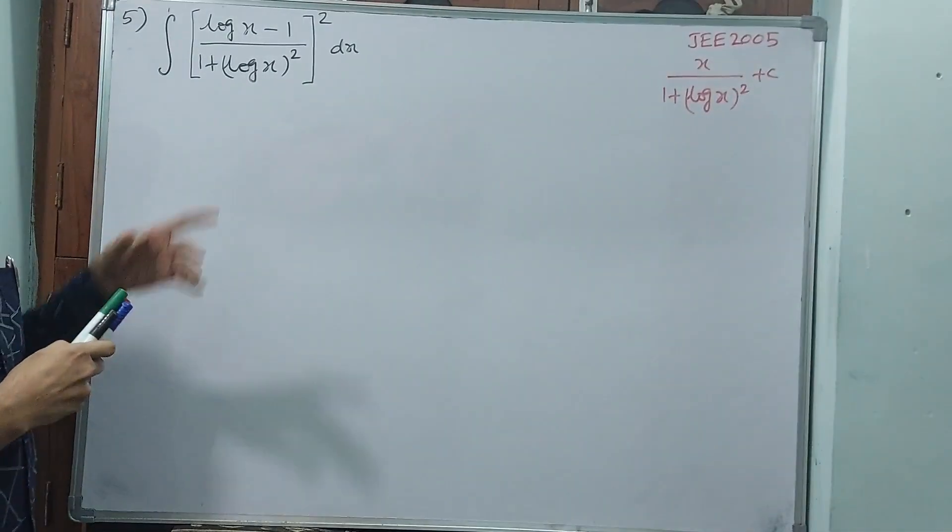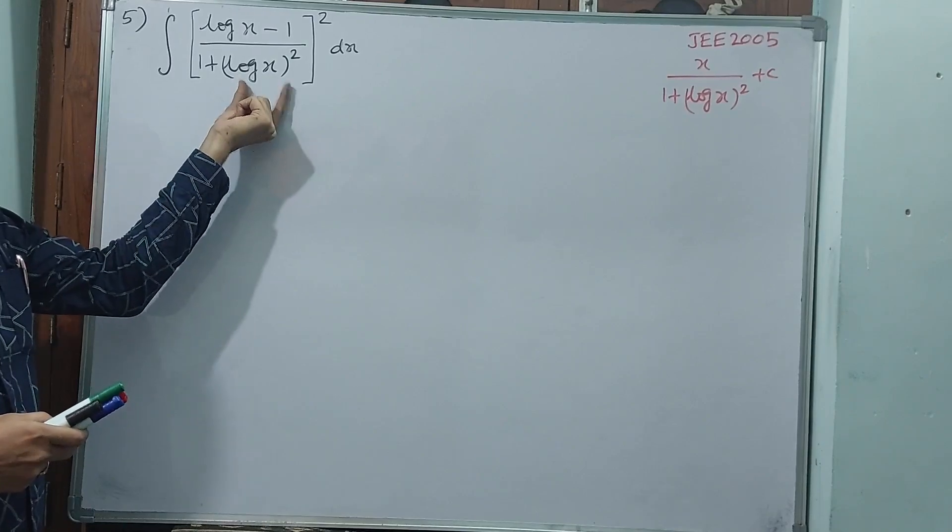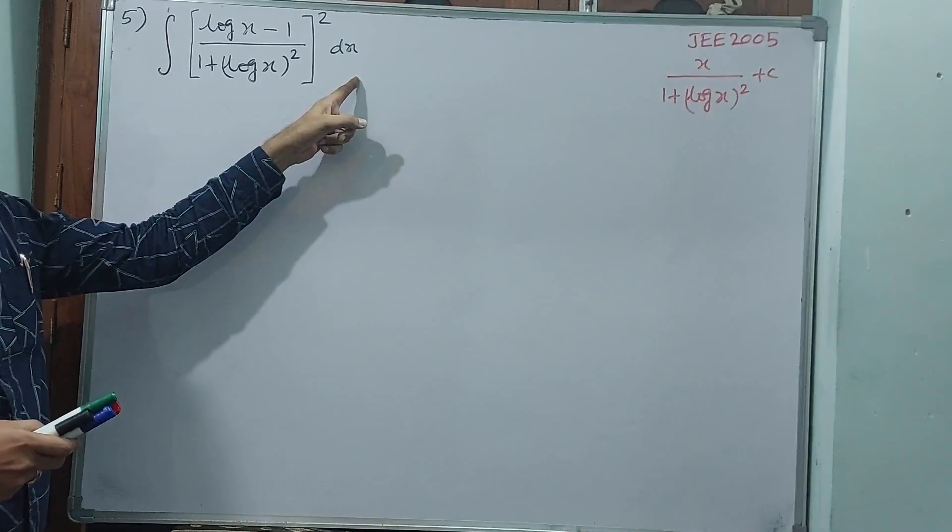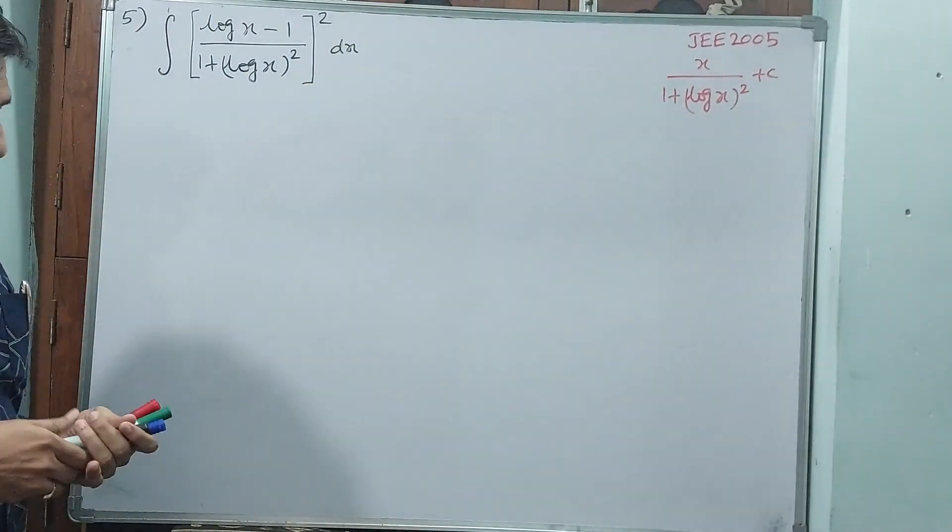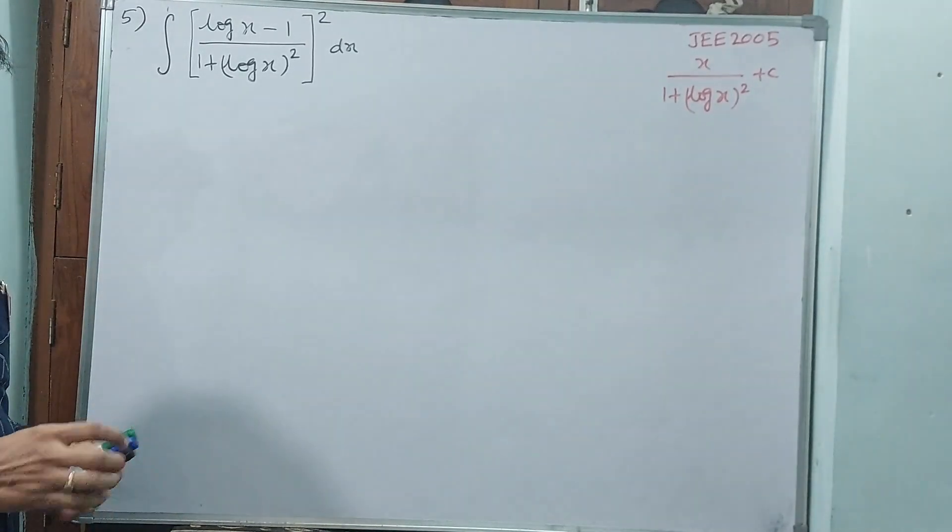Integral log x minus 1 by 1 plus log x whole square, this only log x square, whole square dx. As I have written there, that is not this thing, let me write one formula first.